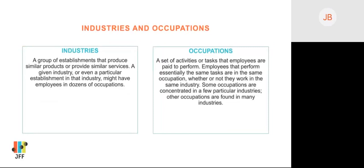Labor market information is analyzed and organized in two categories: industries and occupations. Industries are classified using a system called NAICS, or North American Industry Classification System, a production-oriented concept that groups establishments by similarities in the products they produce or services they provide. A given industry might have employees in dozens of occupations. Occupations are organized by a classification system that groups workers by job duties — the tasks they show up to do every day. Employees performing essentially the same tasks are classified in the same occupation, whether or not they work in the same industry.